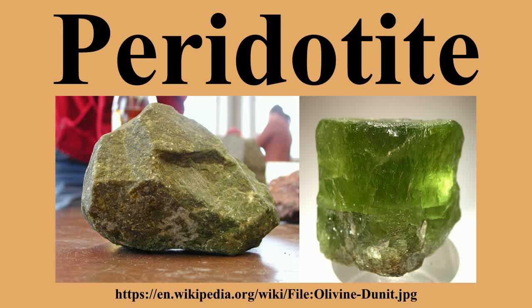Associated rocks: komatiites are high-degree partial melts of peridotite. Eclogite, a rock similar to basalt in composition, is composed primarily of sodic clinopyroxene and garnet. Eclogite is associated with peridotite in some xenolith occurrences, and also occurs with peridotite in rocks metamorphosed at high pressures during processes related to subduction.